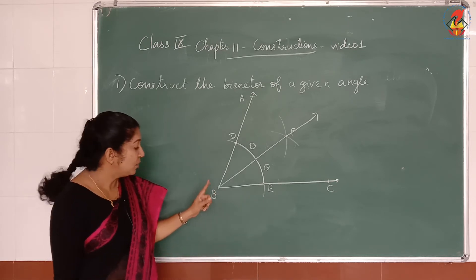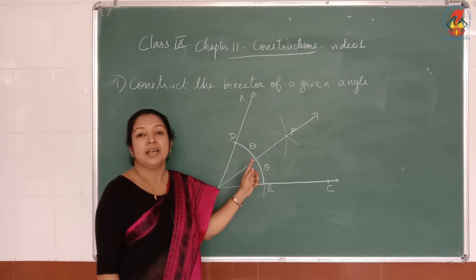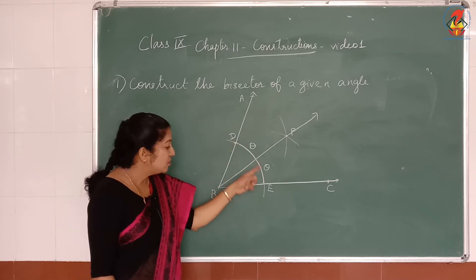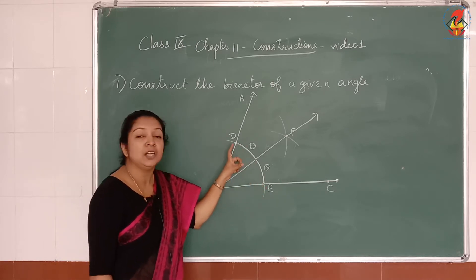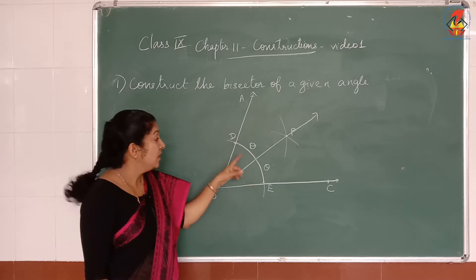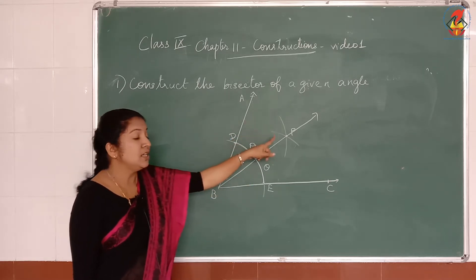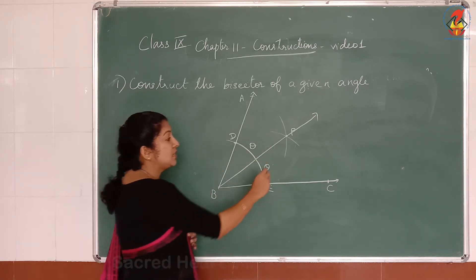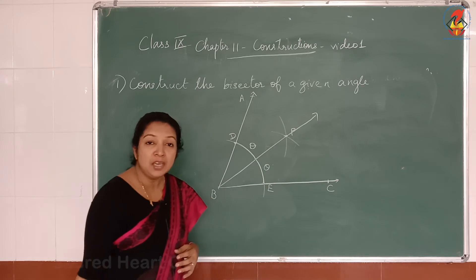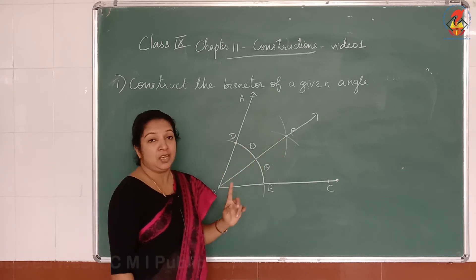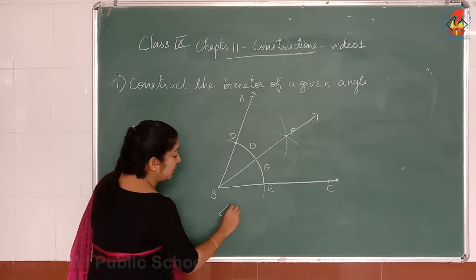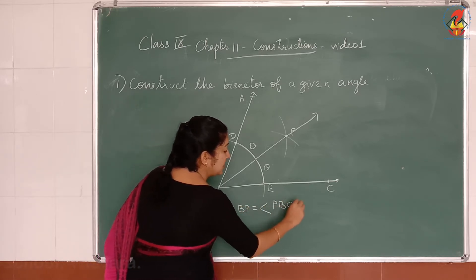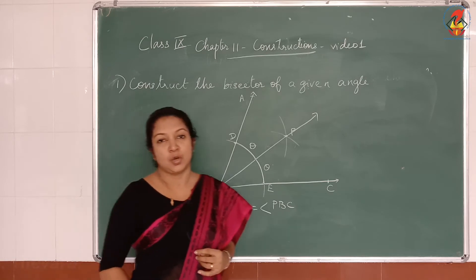So what we have done: we have taken B as a centre and any radius, draw an arc DE. Then take more than half of DE as a radius, with D as a centre draw an arc, and with E as a centre draw an arc. Take the point of intersection of these two arcs as P and join B and P. So angle ABP is equal to angle PBC. This is the required angle.